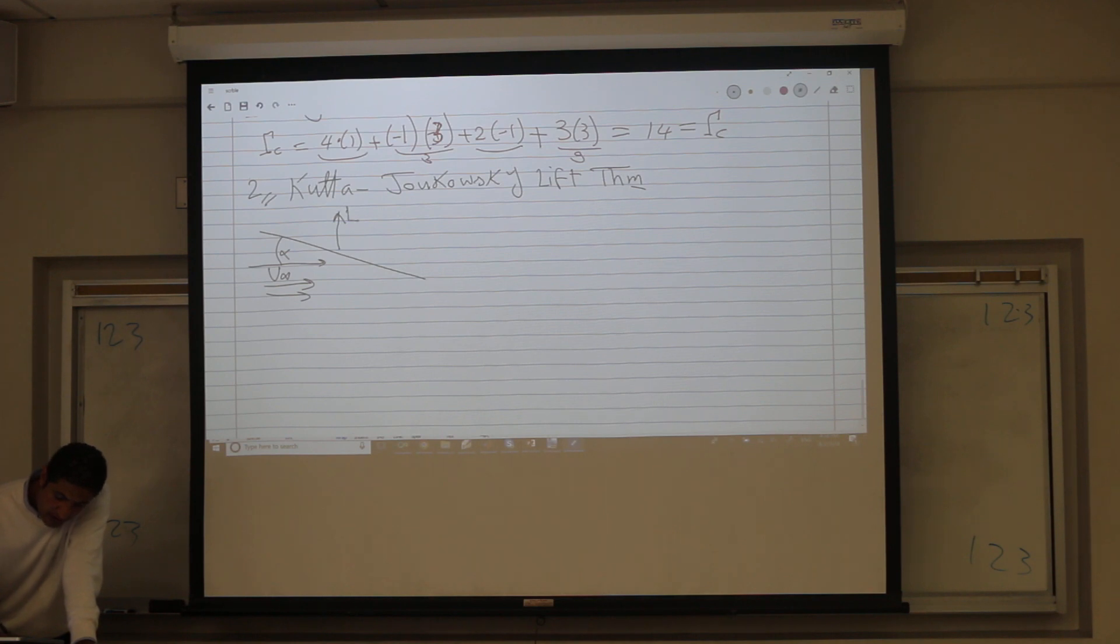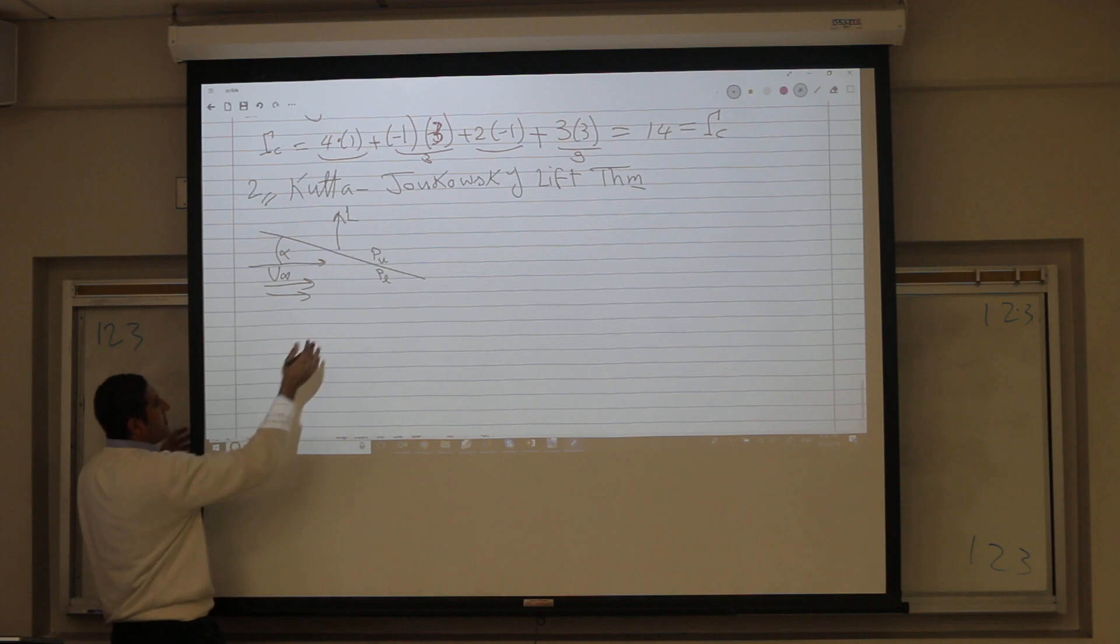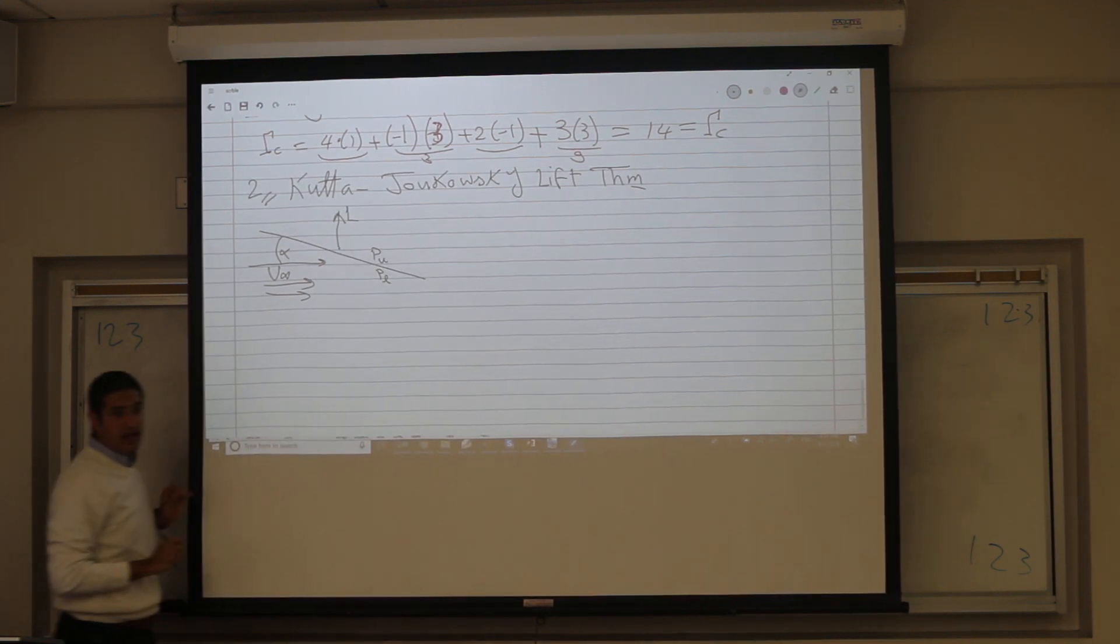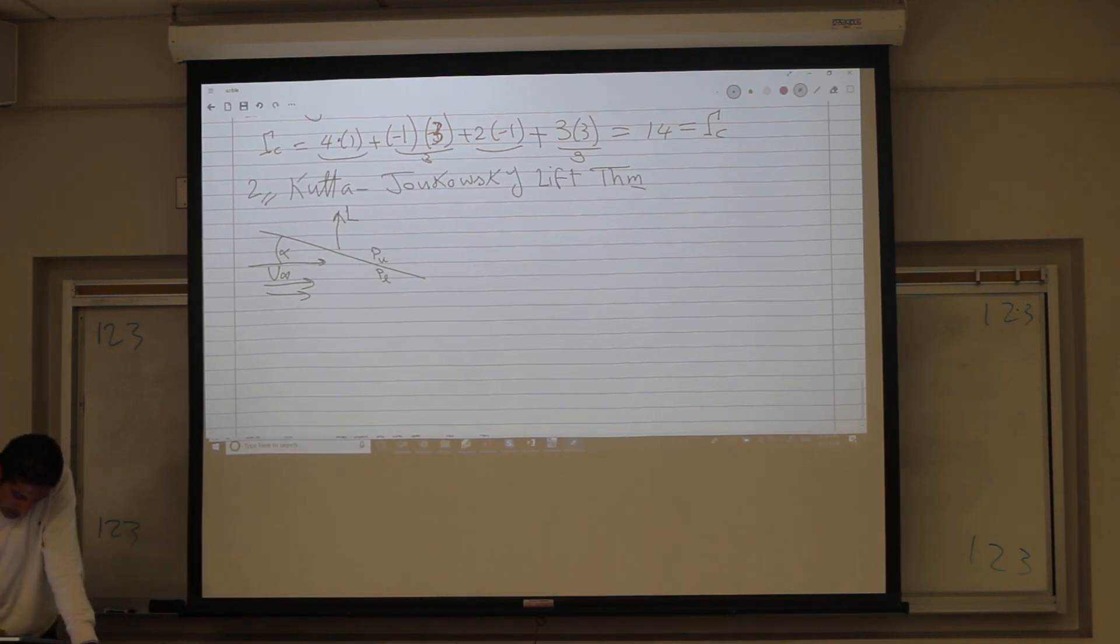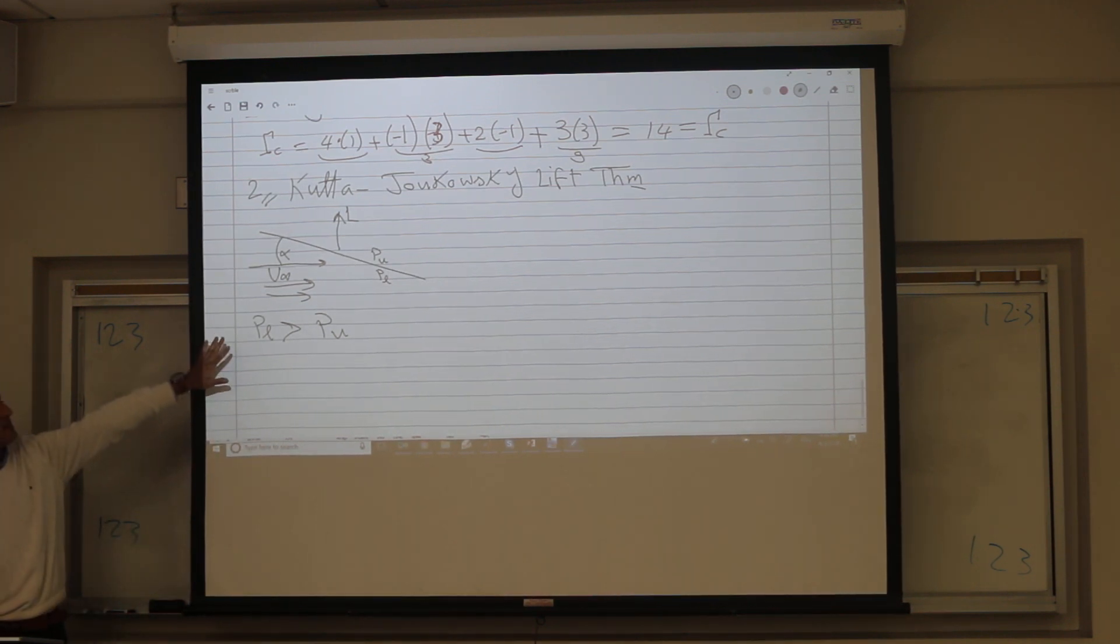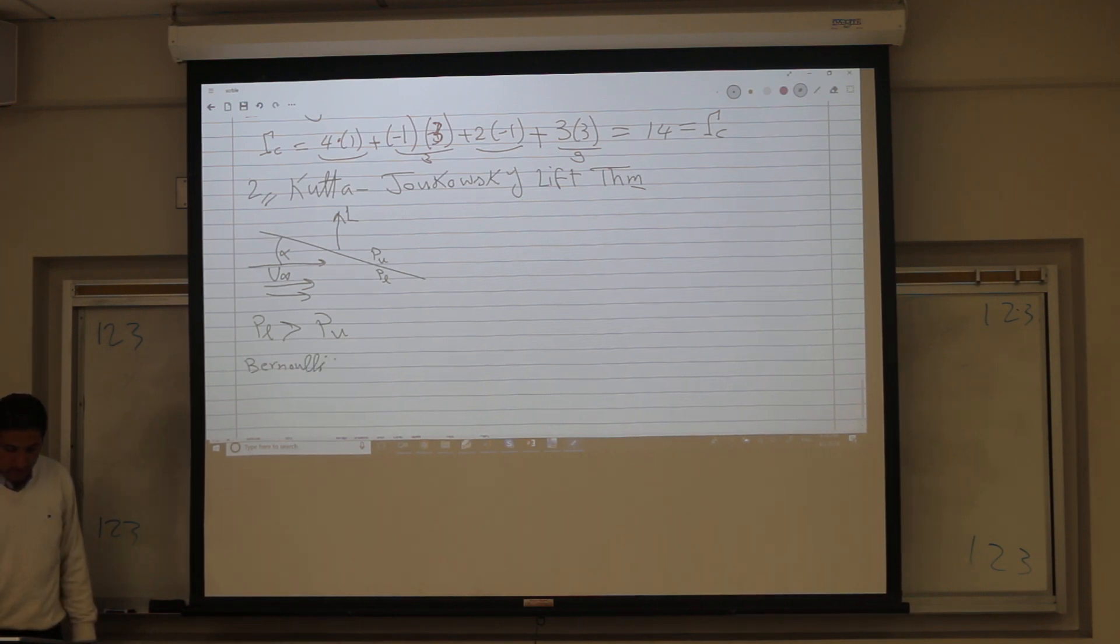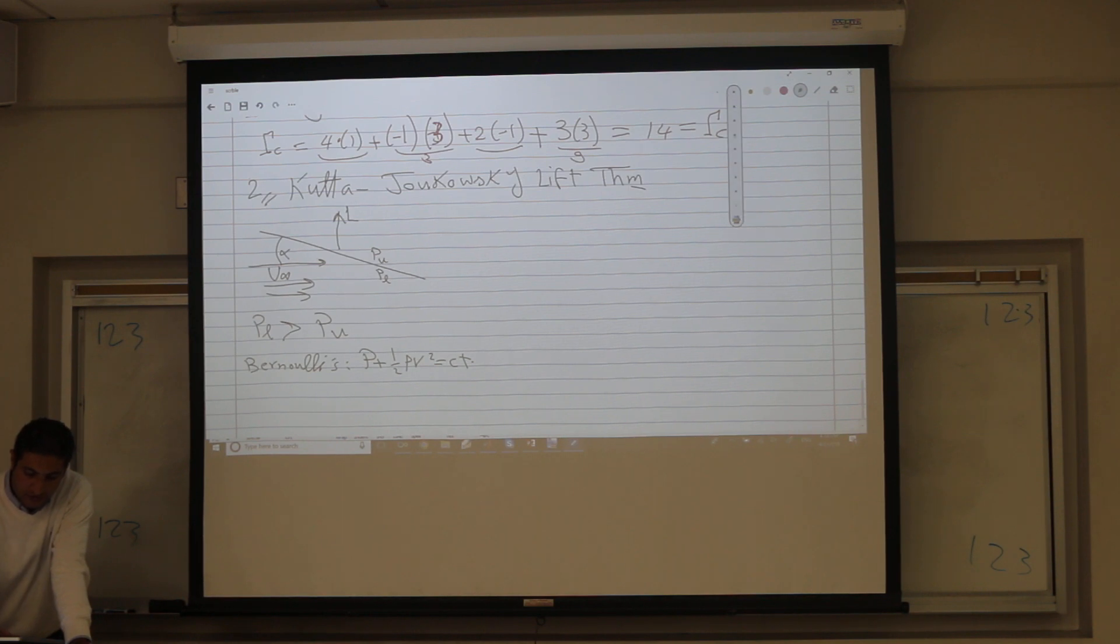In order for a positive upward lift to generate, what about the pressure difference? Which is greater? I must have the pressure in the lower surface is higher than the pressure in the upper surface, correct? And here we were talking about steady flow. If it's steady flow, then I have the Bernoulli equation applied. So P plus one half rho v squared is constant. So if the pressure increases on some surface, the velocity has to decrease and vice versa.